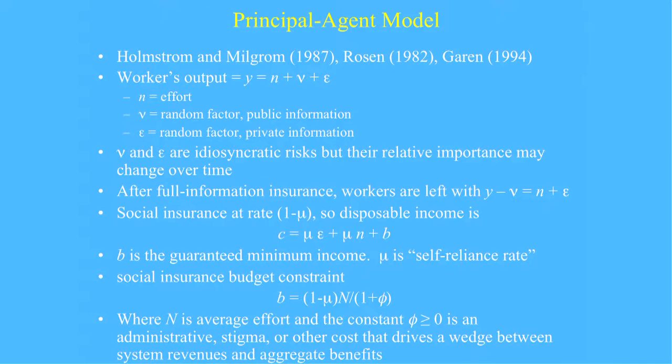When it comes to that shock, they're going to want some insurance but not full insurance necessarily. The degree of insurance, I'm going to parameterize as one minus mu. A person's disposable income after all the insurance transactions is going to be mu times his effort, mu times the private information shock, and then whatever receipts he gets from the treasury or insurance companies. Another word in public finance, B is described as a guaranteed minimum income.